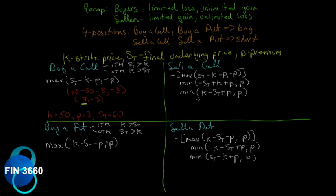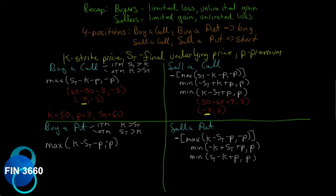For selling that same call with K = 50, P = 3, S_t = 60, the payoff is min(50 − 60 + 3, 3) = min(−7, 3) = −7. Buying the call gives us the pair (7, −3) and selling the call gives us (−7, 3) — the exact opposite. This is a zero-sum game: if you know the payoff from buying a call, you automatically know the payoff from selling it.